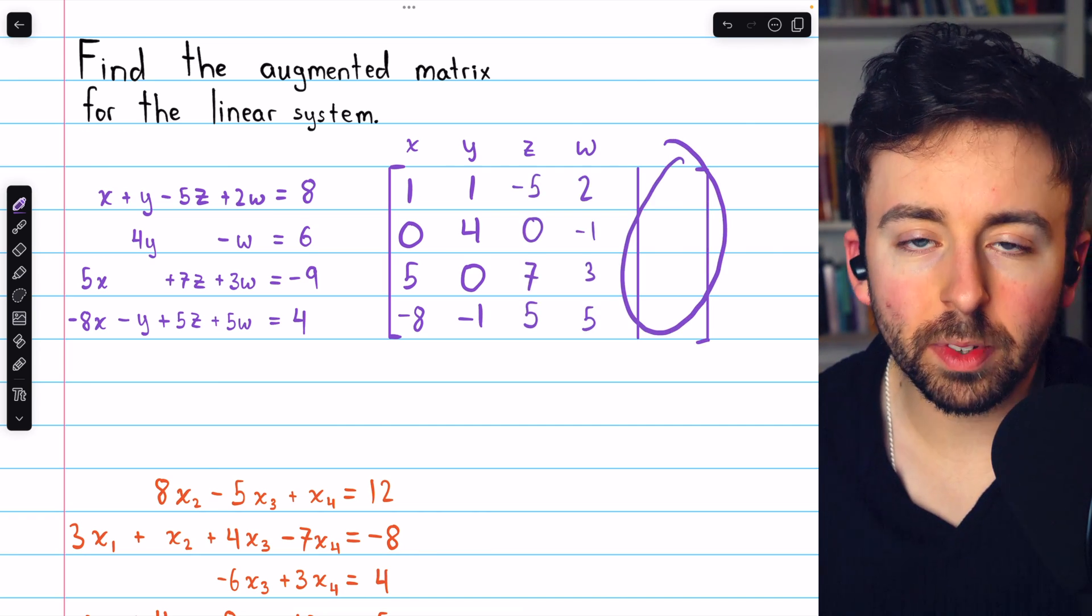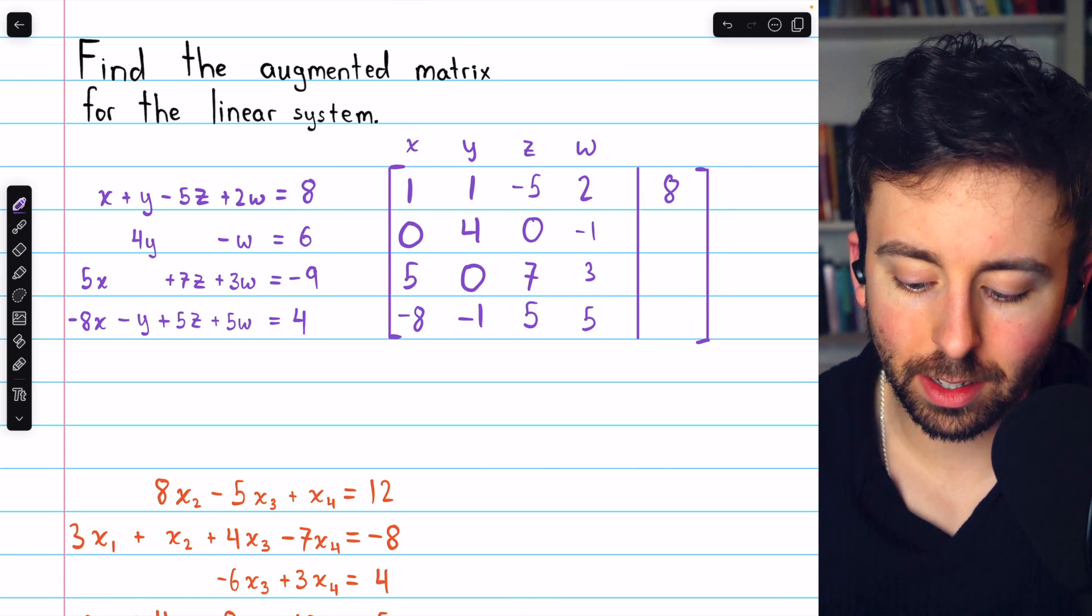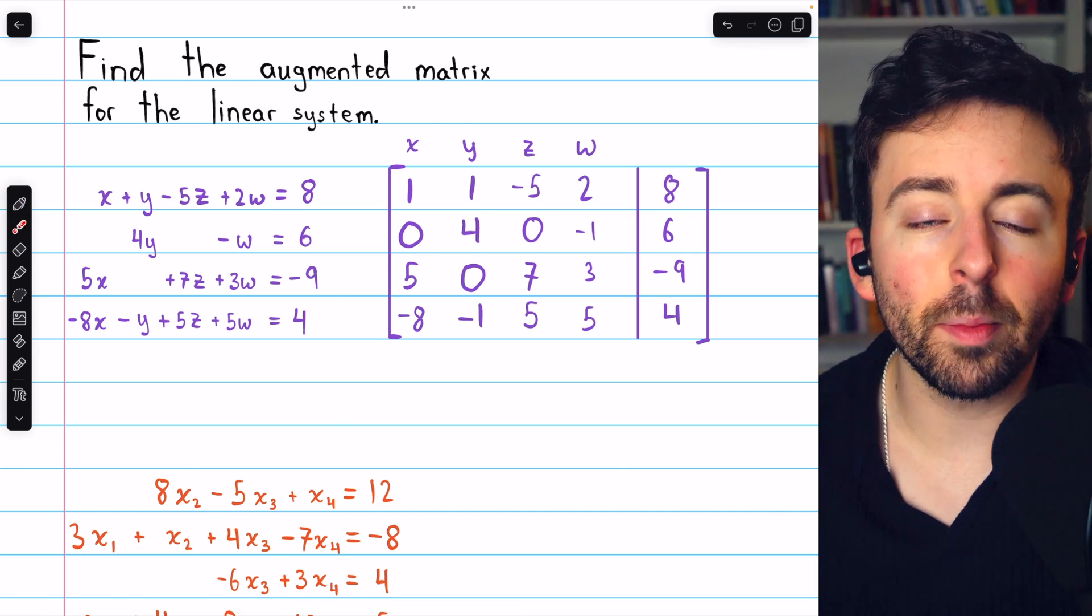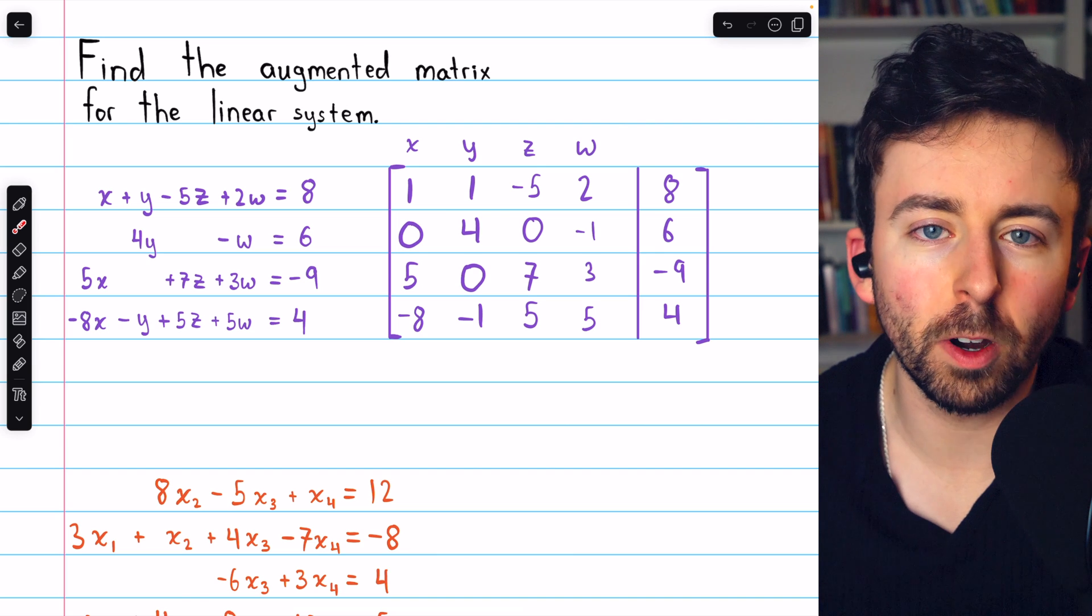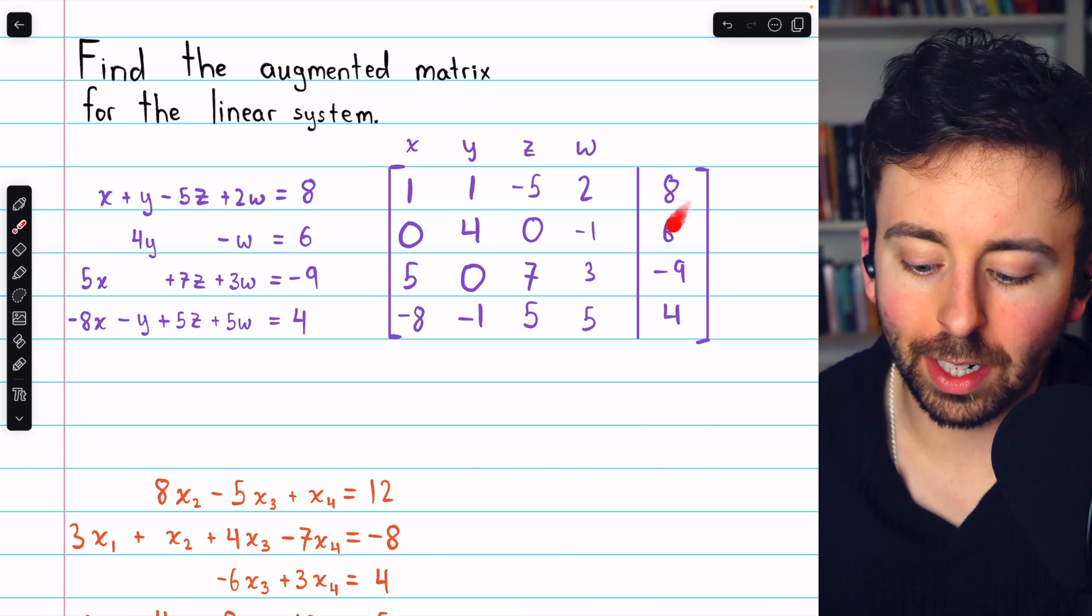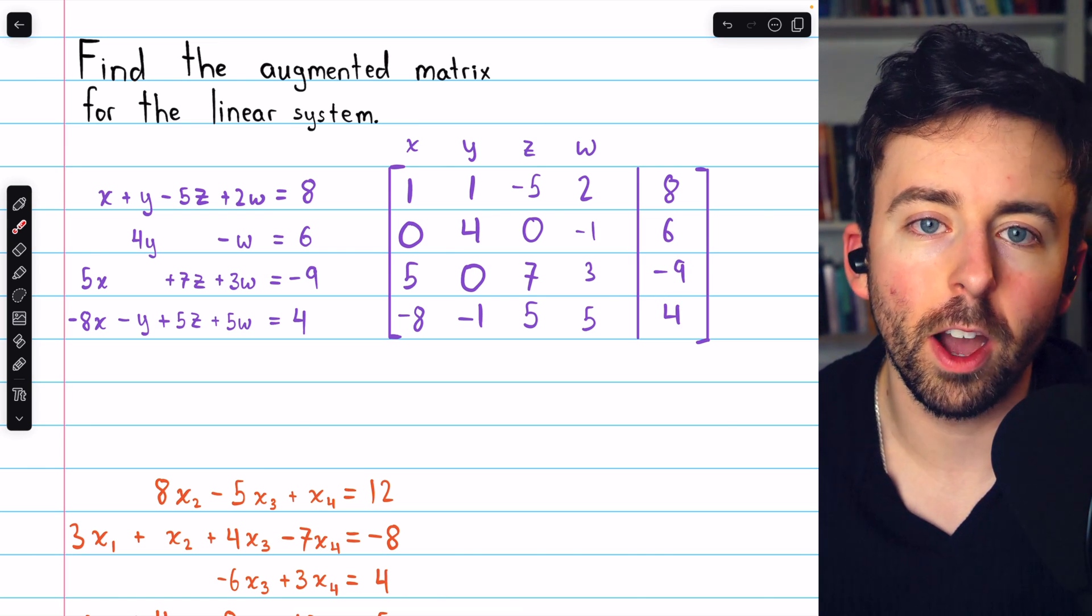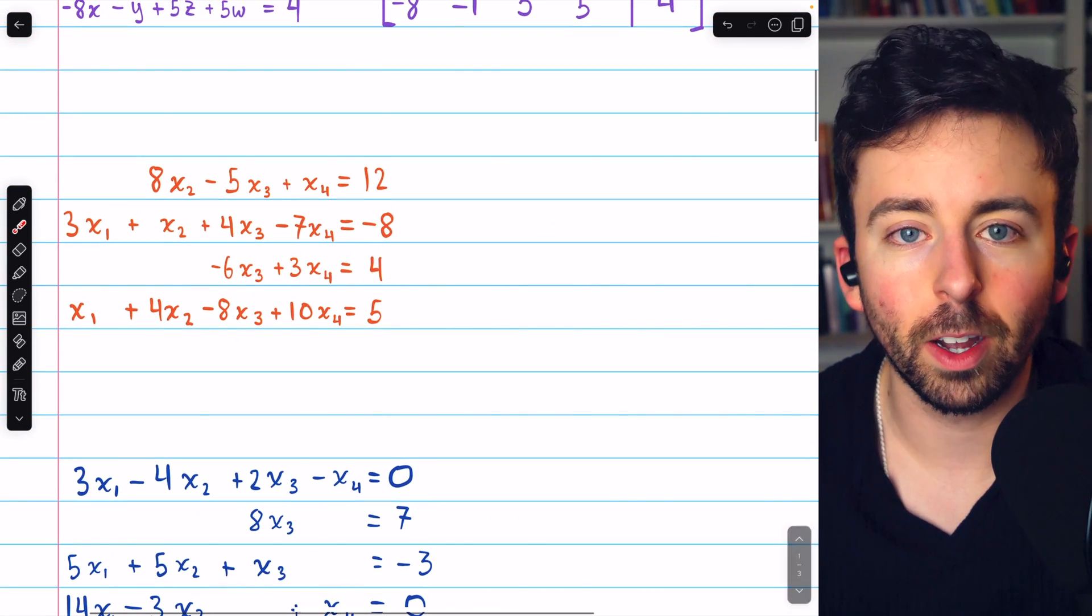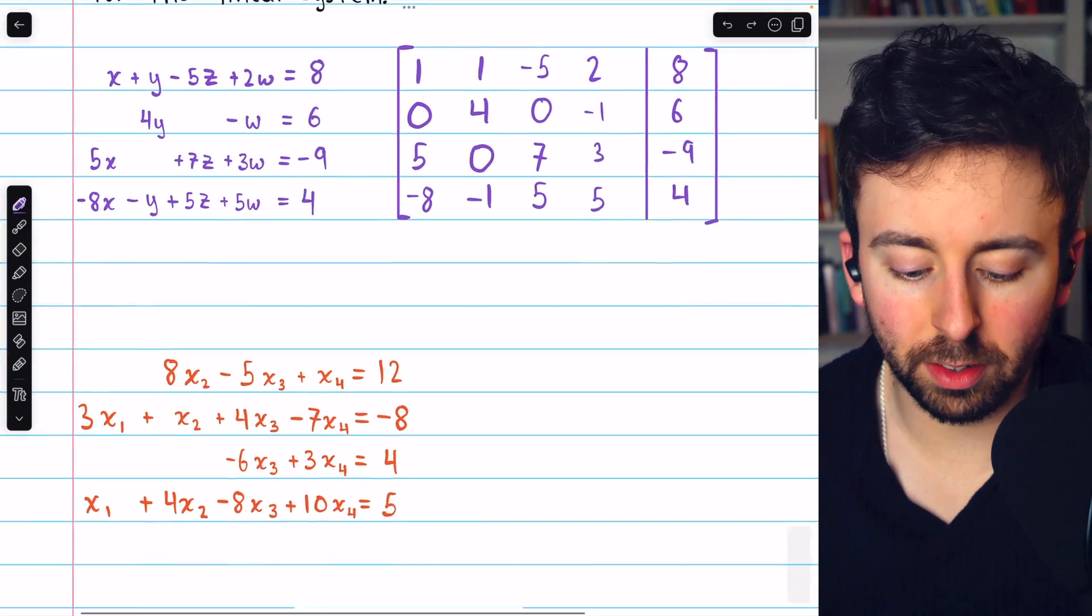We repeat this process for z and w. And then the last column, separated from the coefficients, represents all of the constants. So, eight, six, negative nine, and four. I'll mention that in some cases, when we have a linear system where all the constants are zero, we'll actually often find it convenient in those situations to not even include this column. And so, we technically wouldn't even be working with an augmented matrix. But, in this video, all of our examples have non-zero constants, which is more typical. So, that's how easy it is to write an augmented matrix for a linear system.